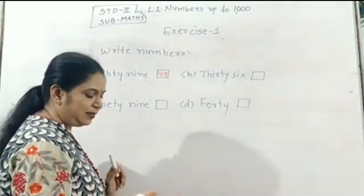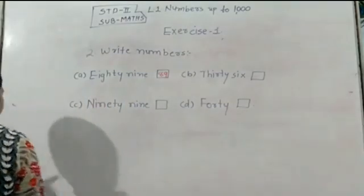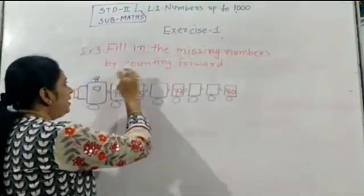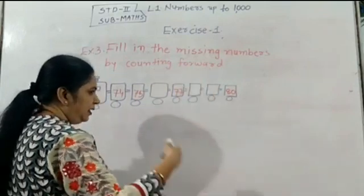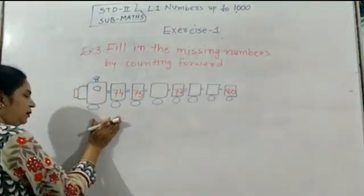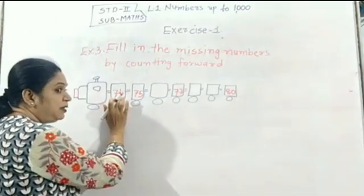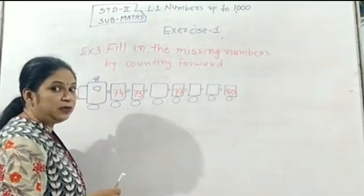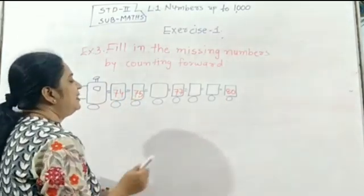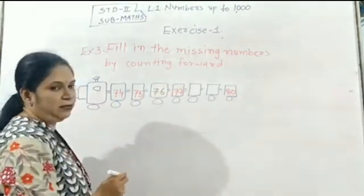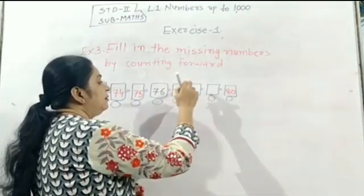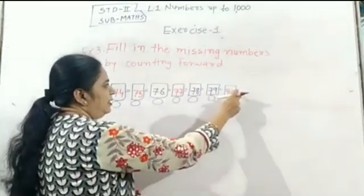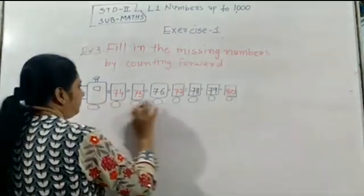Now we are going to exercise 3. This is a number sequence. After 75, which number will come? 74, 75, 76. Very good, then 77, 78, then 79, and then 80. Very good. Now we have to complete all the numbers.